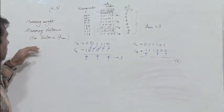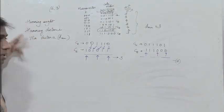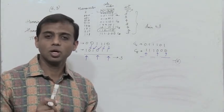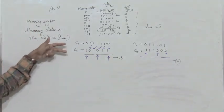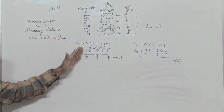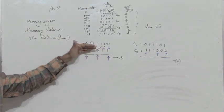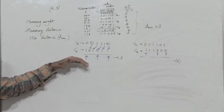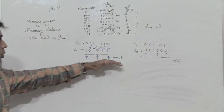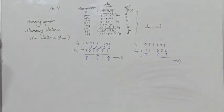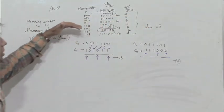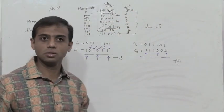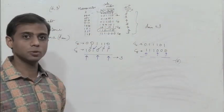So we have understood three parameters. Hamming weight is the number of non-zero components in the code word. Hamming distance is found by taking any two code words and finding in which bit positions they differ — the number of differing positions gives the hamming distance. Minimum distance is defined as the minimum hamming distance between any two code words, and is also equal to the minimum hamming weight, neglecting the all-zero combination.